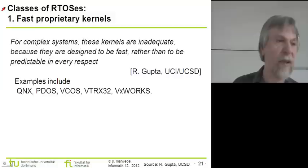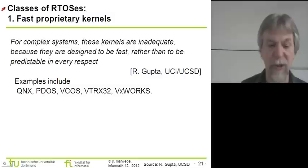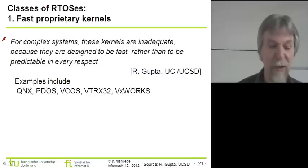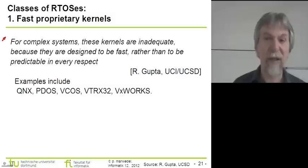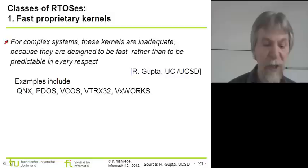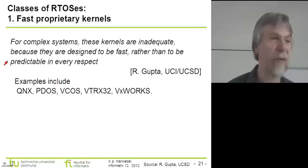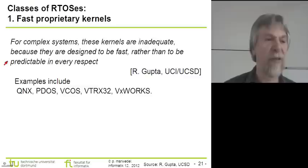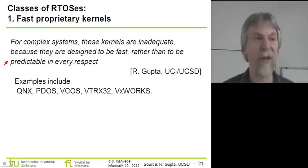Citing Rajiv Gupta from the University of California at San Diego, the first class is fast proprietary kernels — a vendor designs a kernel to be fast. According to Rajiv, for complex systems these kernels are inadequate, because they are designed to be fast rather than fully predictable. There is no complete redesign of the OS — it could be just fast enough for soft real-time requirements, but guaranteeing a tight upper bound on execution time may be problematic.